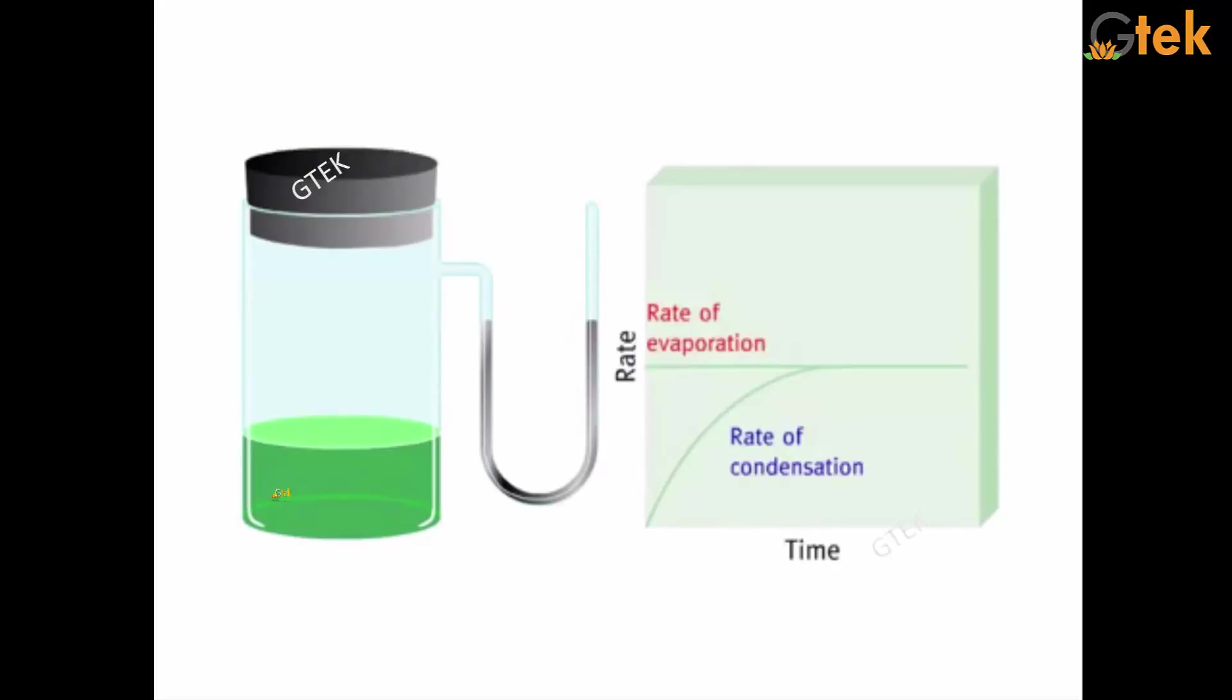Once if you start evaporation, so evaporating automatically, this is not balanced. You are able to see it. Once if it starts evaporating, automatically this will go down. This shows at some rate, the rate of condensation and the rate of evaporation meets at some point.